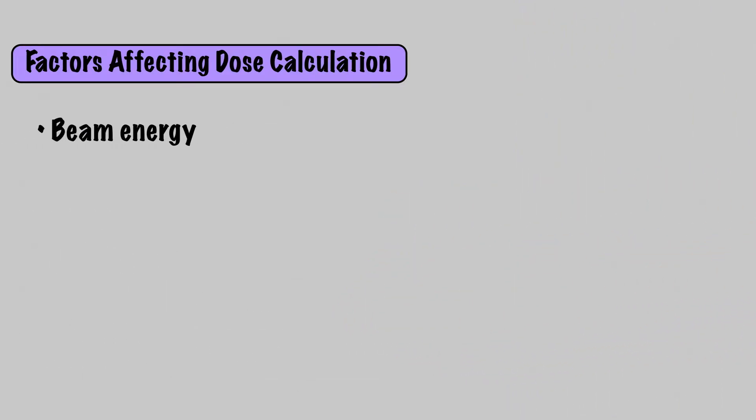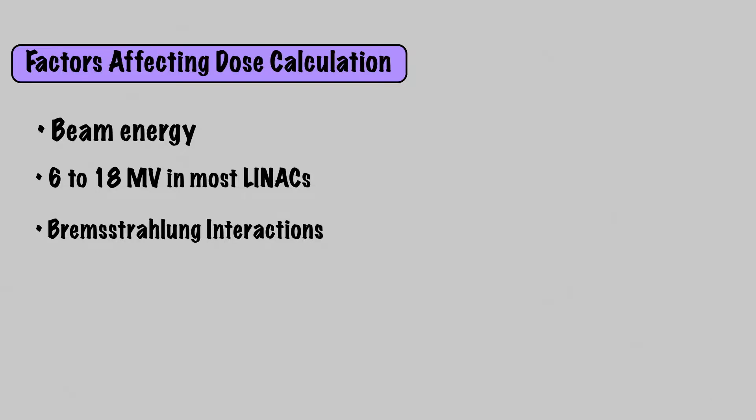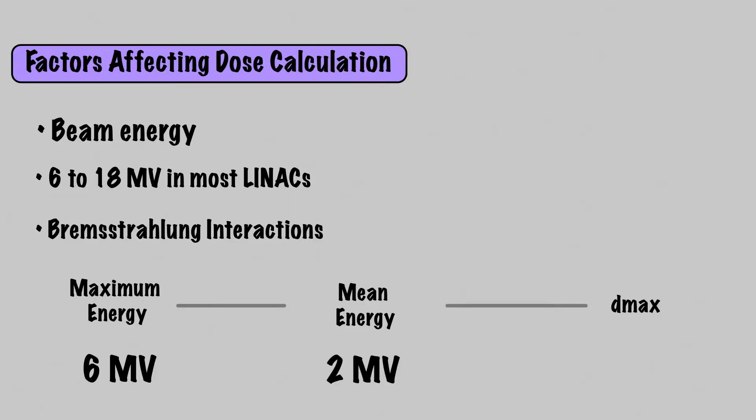The next factor to consider is beam energy, which can range from 6 to 18 megavoltage in most LINACs. Since generated photons are a result of Bremsstrahlung interactions, they have a spectrum of energies. Specific to each energy is a maximum energy, a mean energy, and a D-max. For example, a 6 megavoltage beam has a maximum energy of 6 MV and a mean energy of 2 MV, because mean energy is typically about one-third the max, and a D-max of 1.5 centimeters.